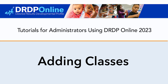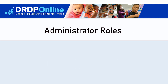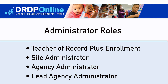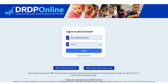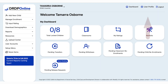In order to add classes you would need one of the following administrative roles: teacher of record plus enrollment, site administrator, agency administrator, or lead agency administrator. If you're not sure, after signing in confirm the roles you have by going to user profile in the upper right and then checking your roles.